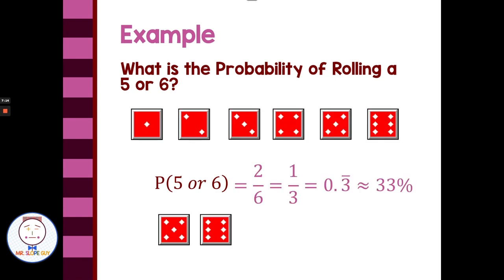What is the probability of rolling a 5 or a 6? Two of the dice faces are 5 and 6 out of 6 possibilities. So, 2 out of 6, which reduces to the fraction one-third, or 33% of the time. When I roll a dice, it will land on 5 or 6. Remember, we're comparing successes to possibilities — two successes out of 6 possible outcomes.